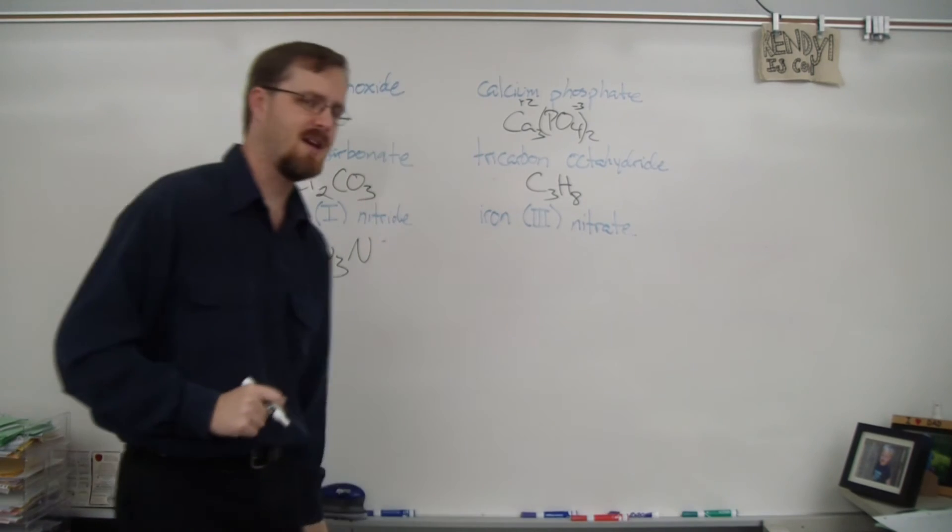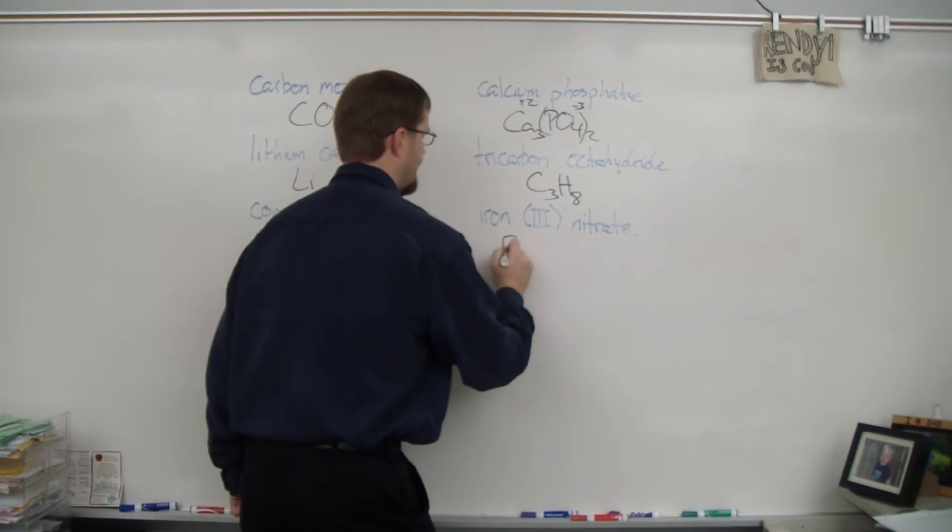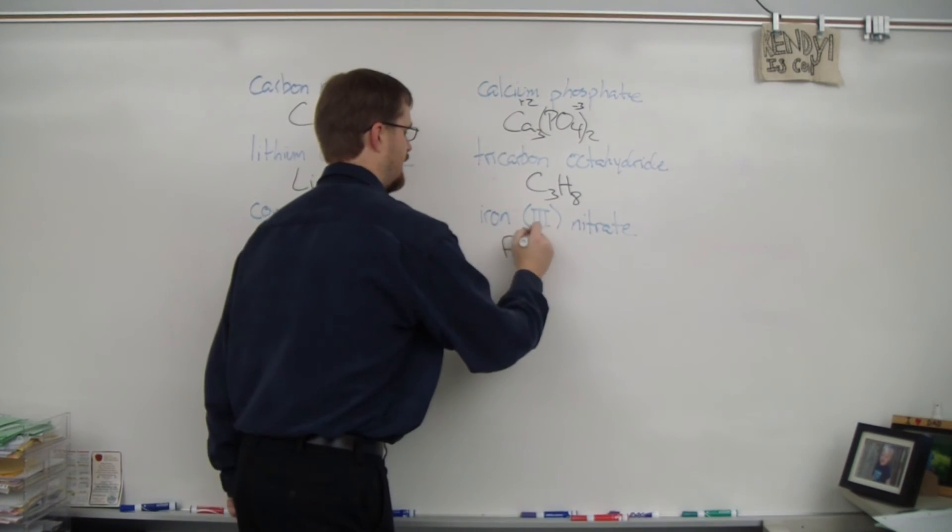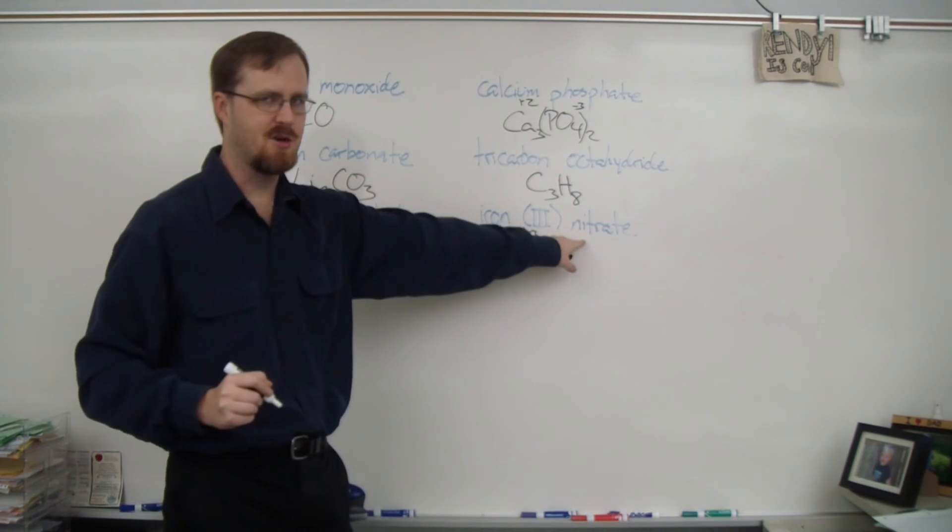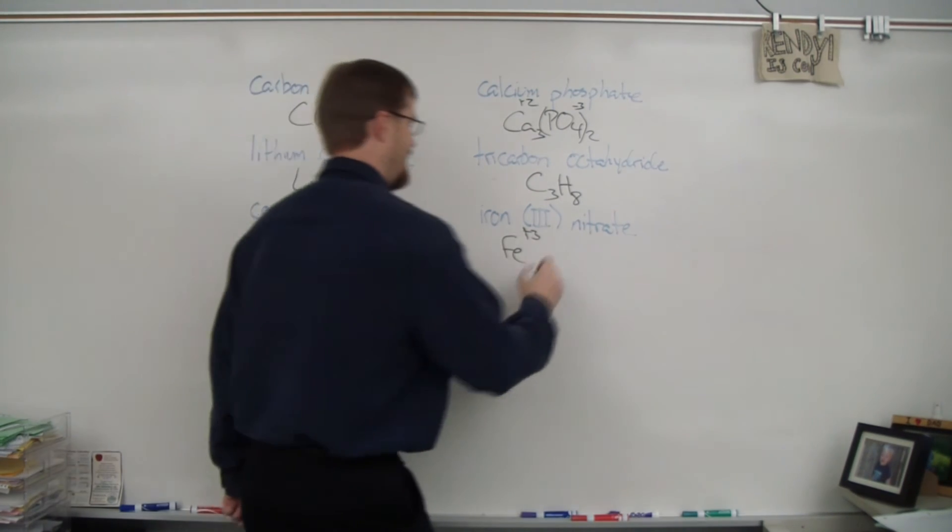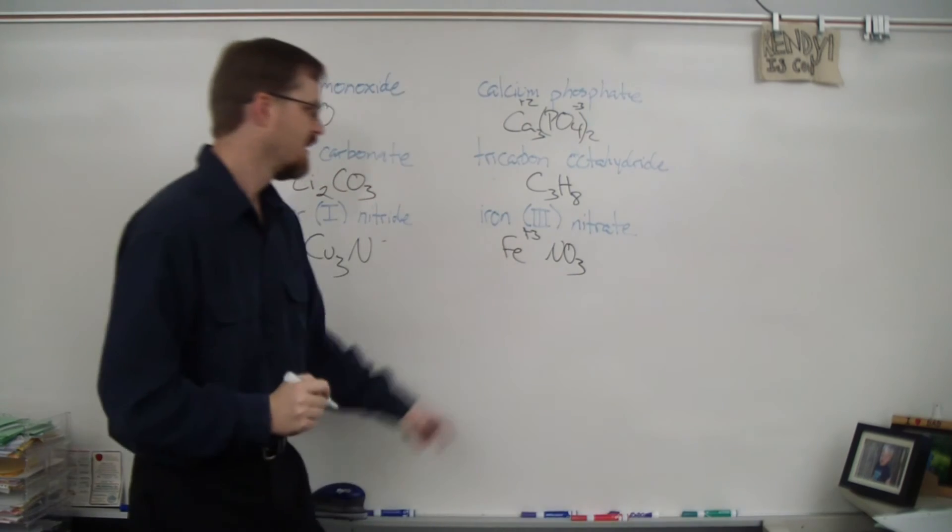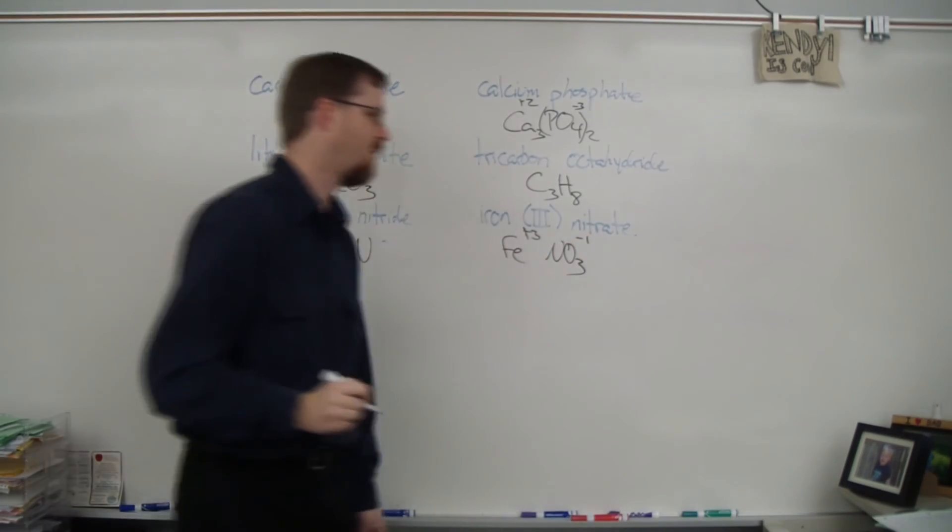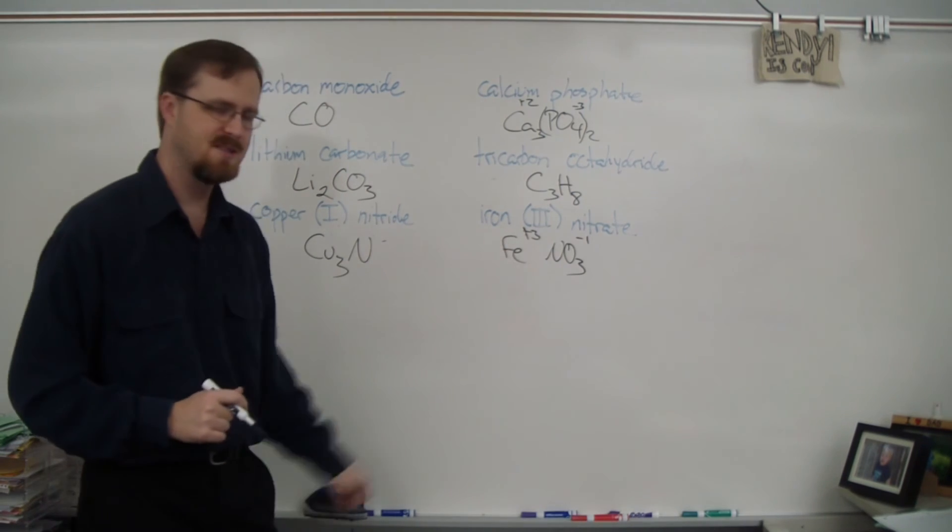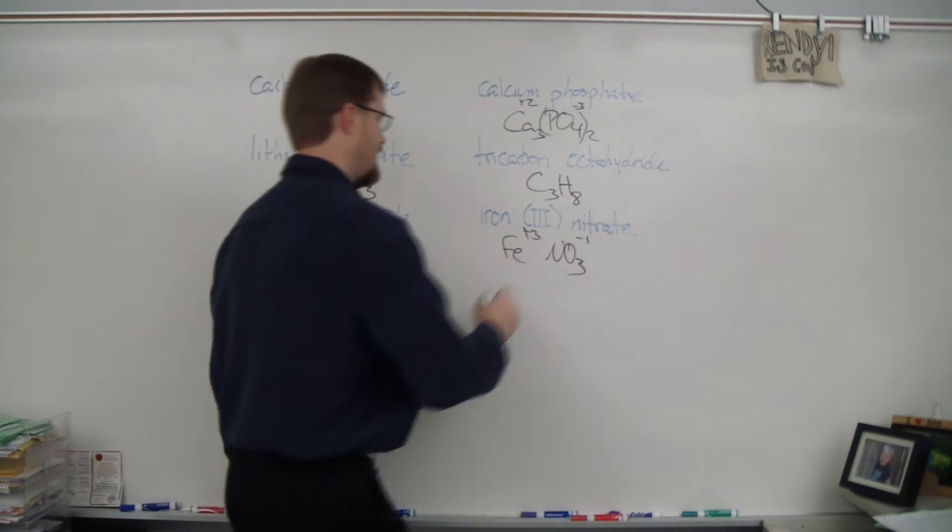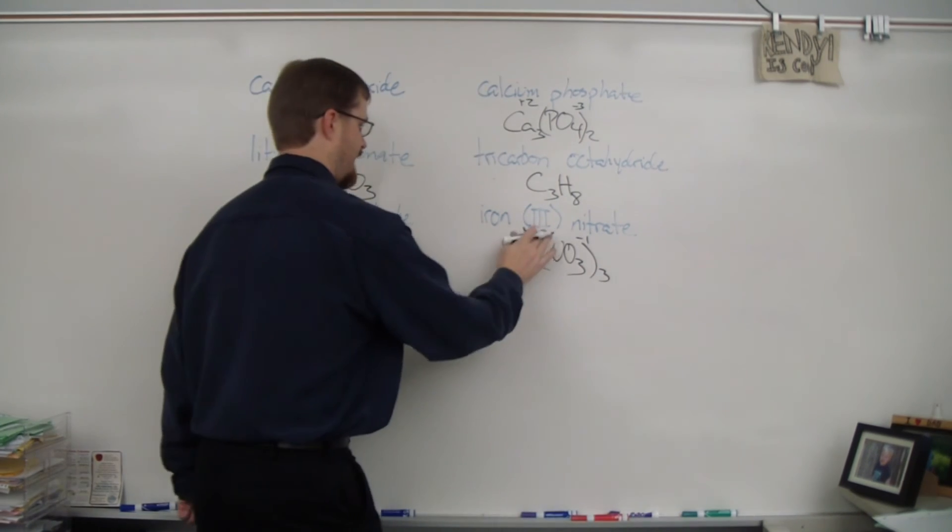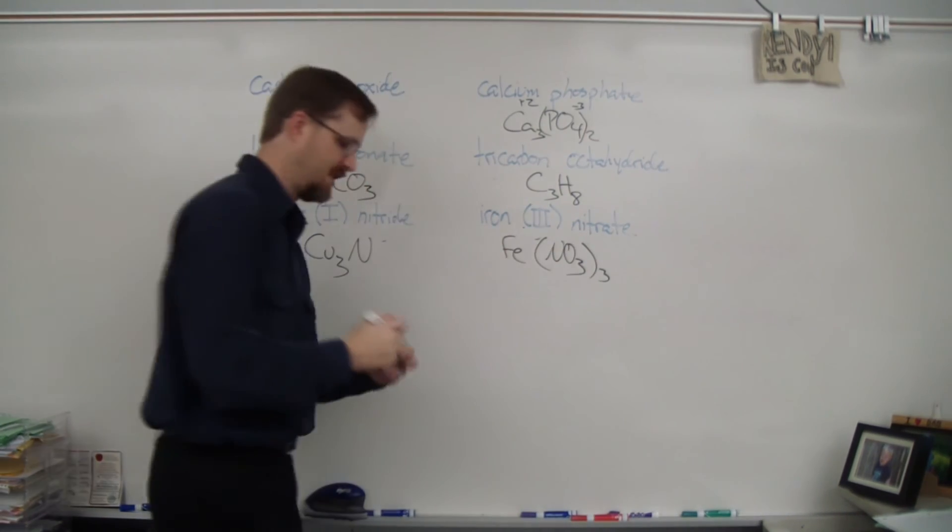Iron three nitrate. So iron is Fe. That three there means that it has a charge of plus three. And nitrate, not nitride. Nitrate is the polyatomic ion NO3 which has a charge of negative one. So in order for everything to balance out here, I need three nitrates to balance out this one iron. So Fe, NO3 in parentheses with a three on the outside. And it looks just like that.